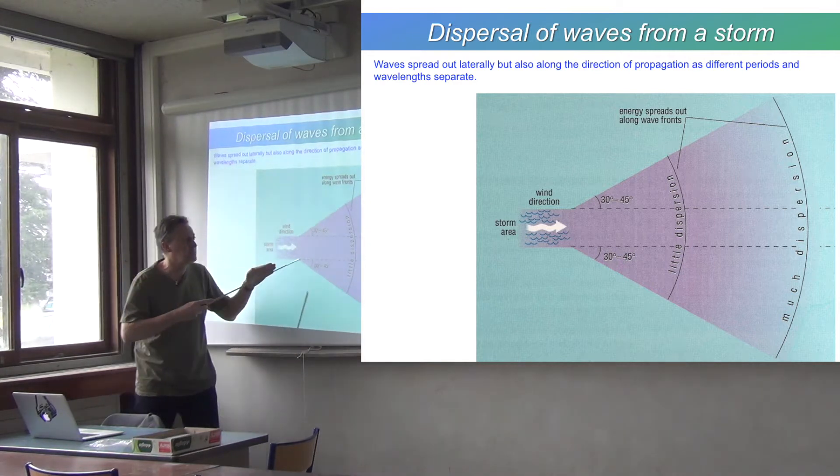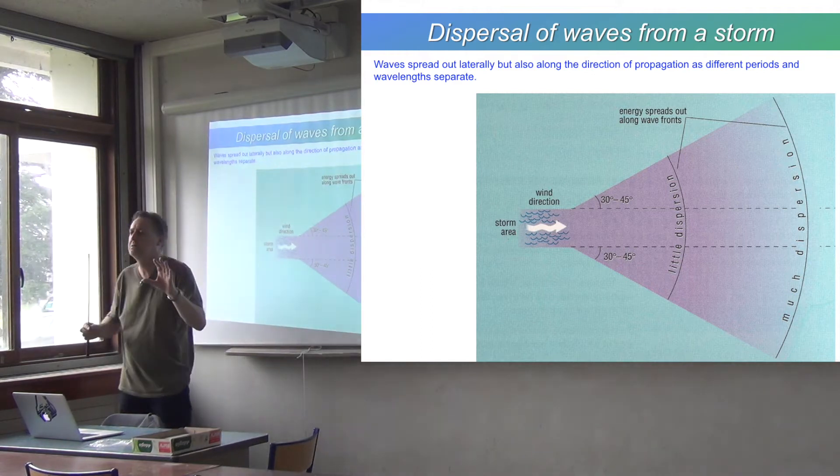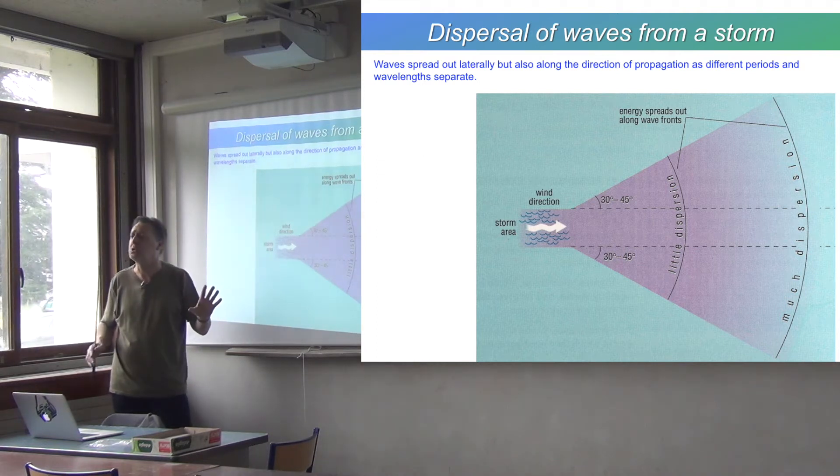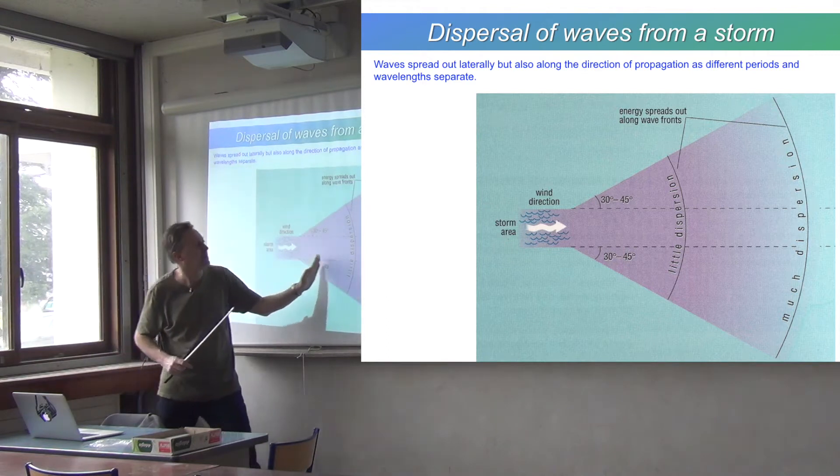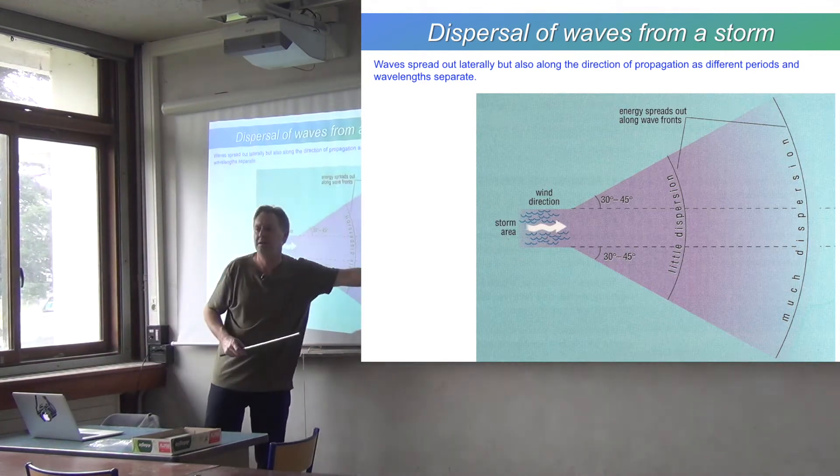They also disperse in the direction of propagation. And we've seen that because deep water waves are dispersive. So the long waves travel faster than the short waves. So you'll have long waves going up quicker and the short waves will arrive later.